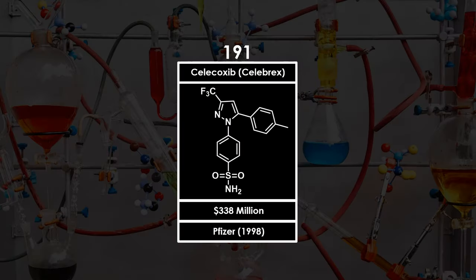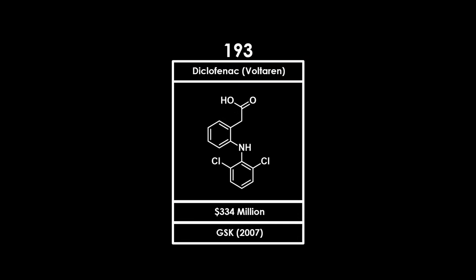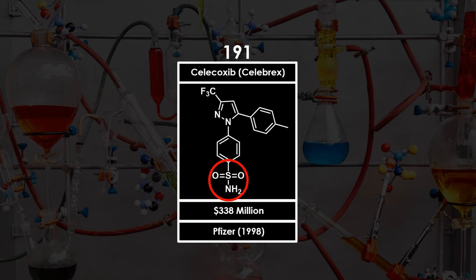Celecoxib, sold under the brand name Celebrex, is another non-steroidal anti-inflammatory drug used to treat arthritis. Unlike diclofenac, which is non-selective between cyclooxygenase 1 and 2, celecoxib is a selective cyclooxygenase 2 inhibitor. Interestingly, the sulfonamide group appears to be crucial for selectivity, as replacing this group with a methoxy group switches the selectivity to a cyclooxygenase 1 inhibitor.